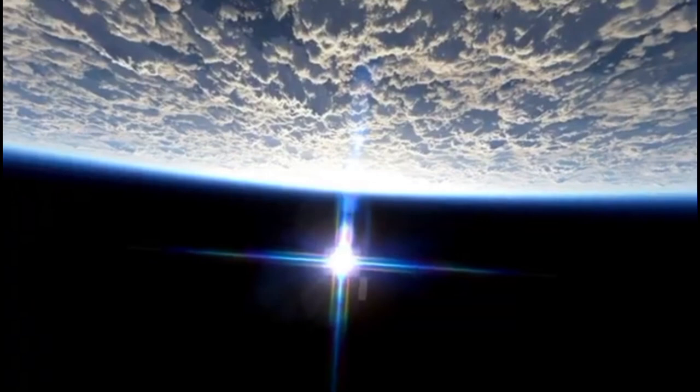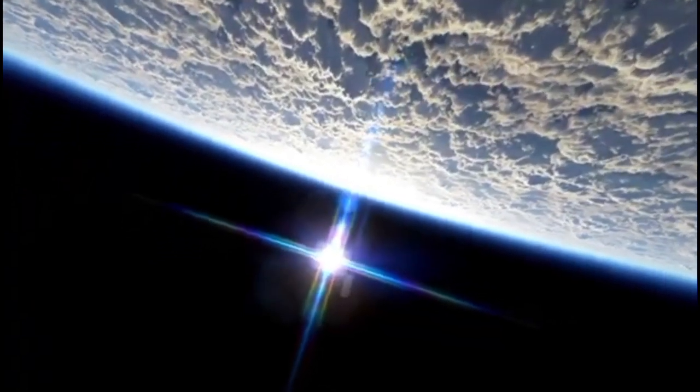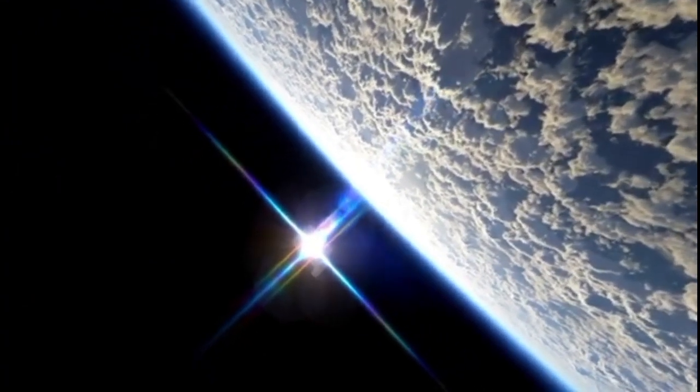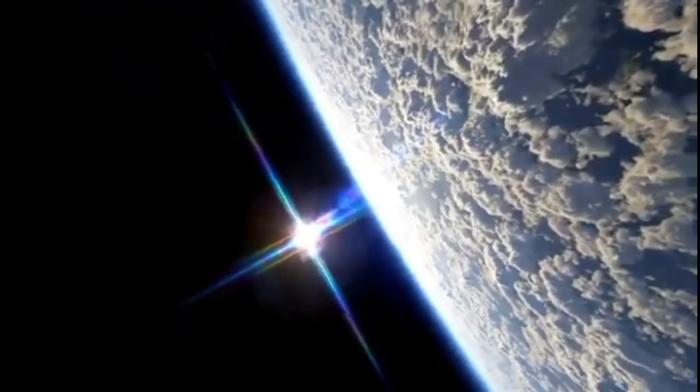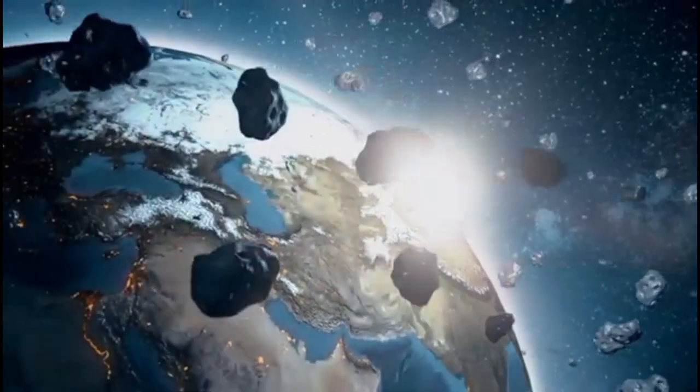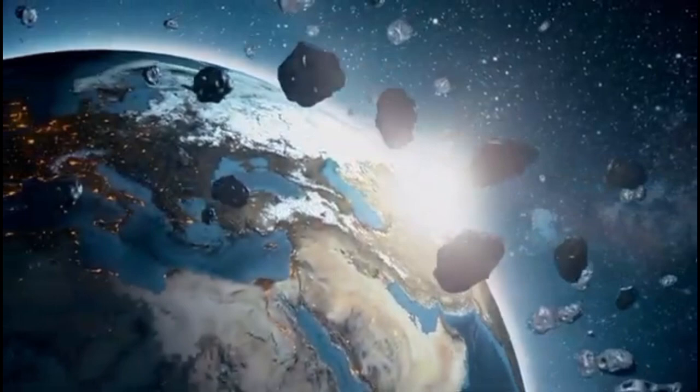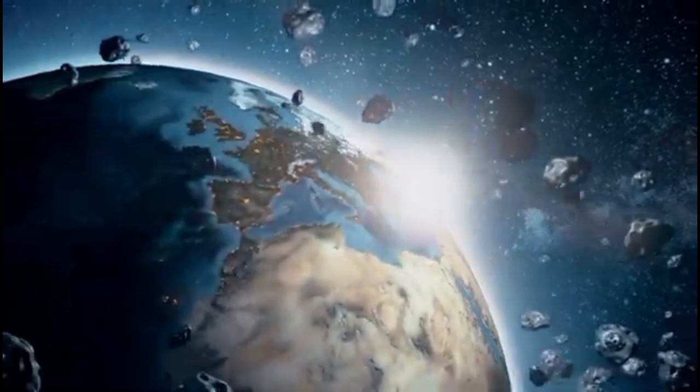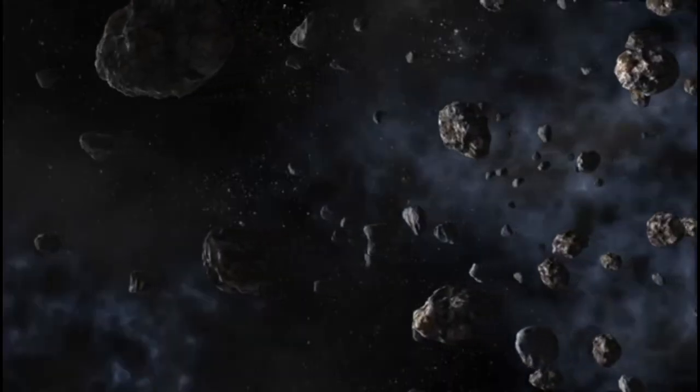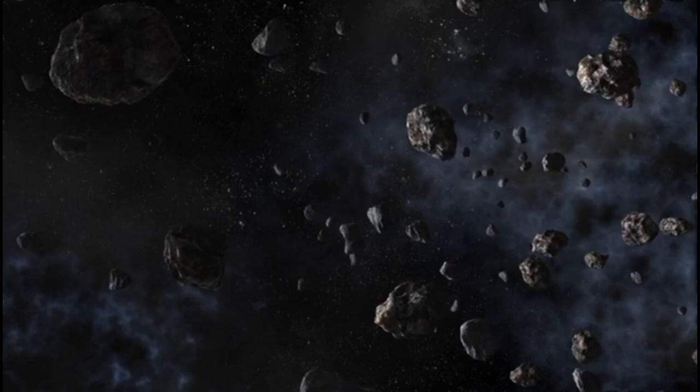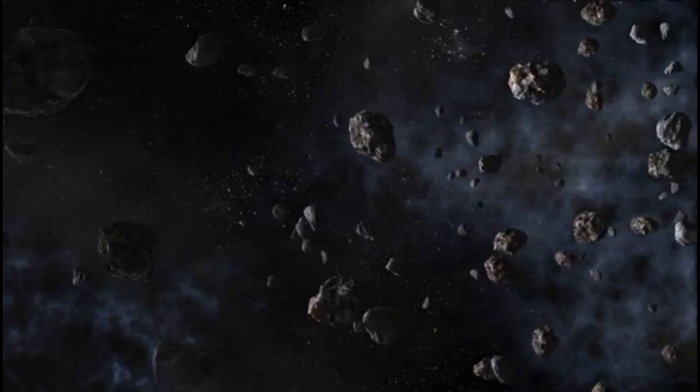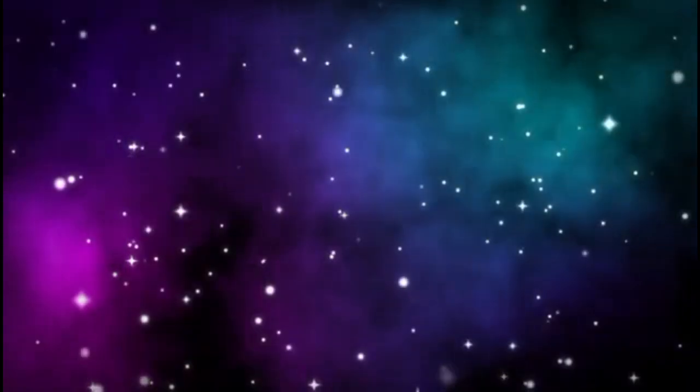General relativity explains the motion of planets in our solar system, such as Earth orbiting the Sun. It predicts planetary paths more accurately than older theories of gravity. One major confirmation of general relativity came during the solar eclipse of 1919, when Sir Arthur Eddington led a team to observe how starlight bent as it passed the Sun. The theory predicted the Sun's mass would curve the starlight slightly. Einstein was right, and the observation supported his theory.